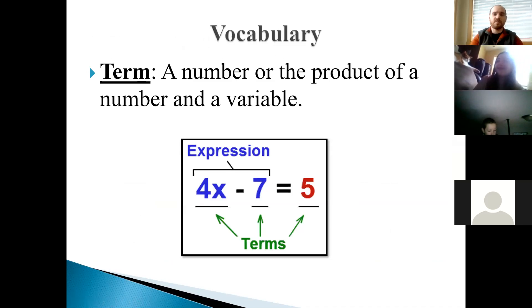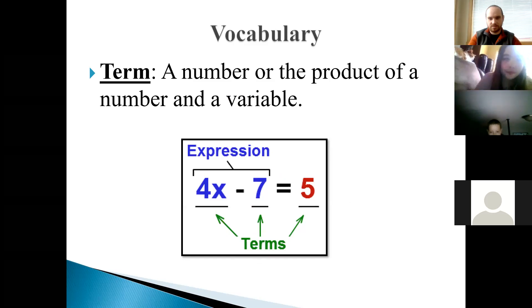These are learning targets. We don't really care about those right now. First vocab word is term, which is a number or the product of a number and a variable. So, in this case, we have three terms in this equation. We have the 4x, we have the 7, and we have the 5. Each one of those is a term.